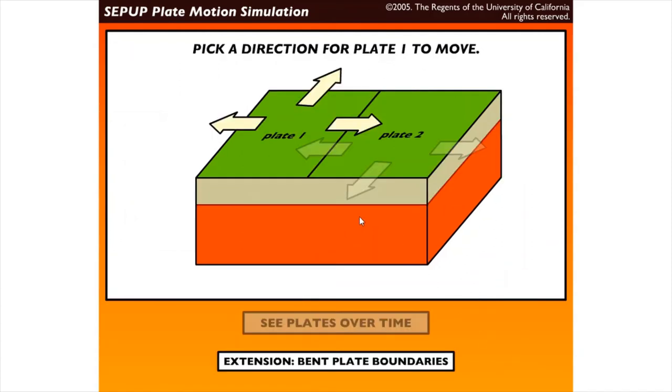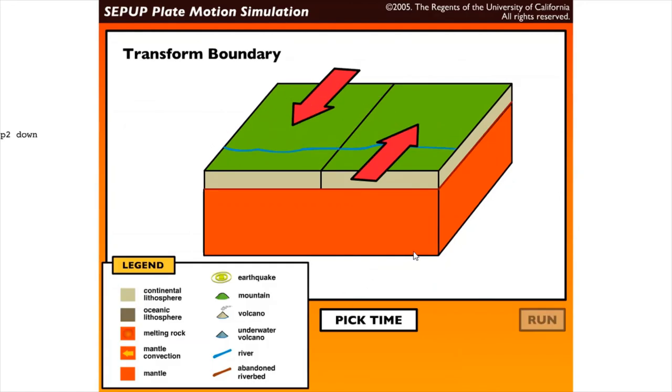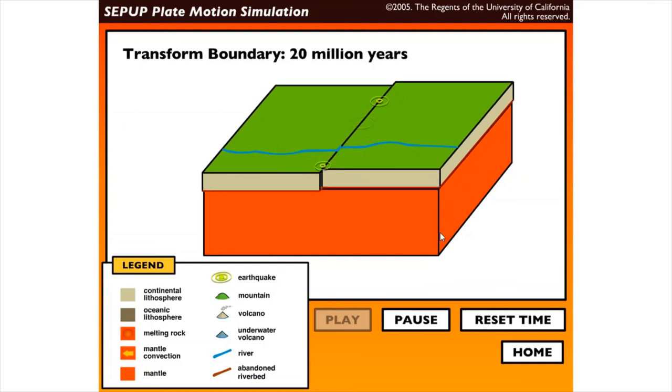Next. So another, we have also transform boundary. So let's pick this one and then run. So what is that geologic event that is happening?